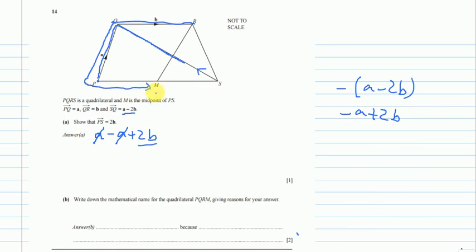So from R to Q is negative B, because we are going in the opposite direction. So it will be negative B. And then from Q to P, it's negative A. And then from P to M, it's a positive B, because P to S is double of the midpoint which is 2B. So just half of it will be a positive B.